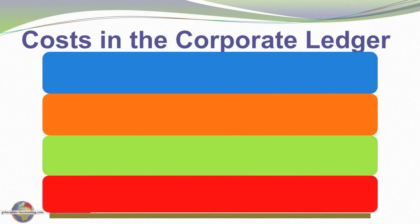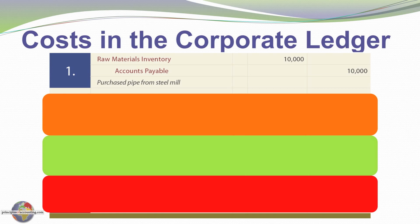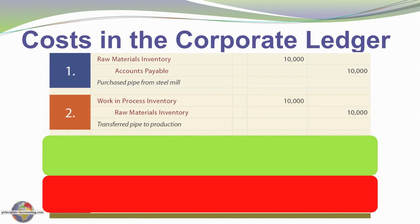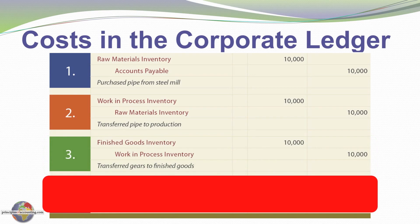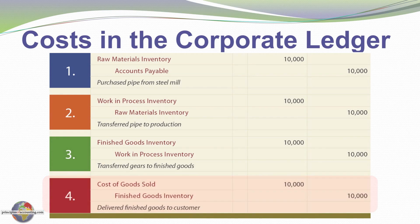Let's look at it in journal entry form. When we buy the material, we debit raw materials and credit accounts payable. When we transfer the pipe into production, we debit work in process and credit raw materials — exactly matching the T-accounts. When we transfer the goods to finished goods, we debit finished goods inventory and credit work in process. And lastly, we debit cost of goods sold and credit finished goods when we deliver the goods to a customer.